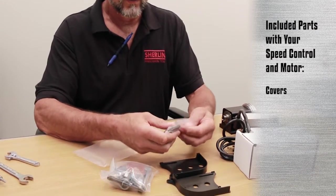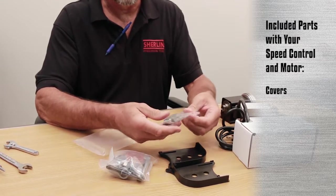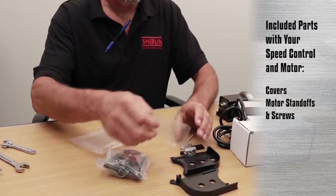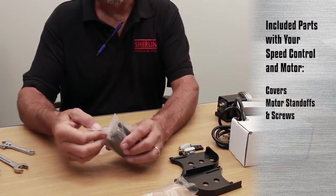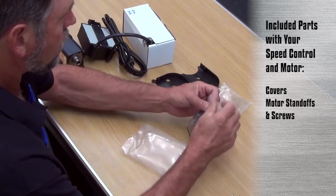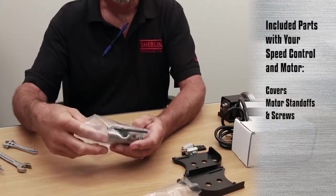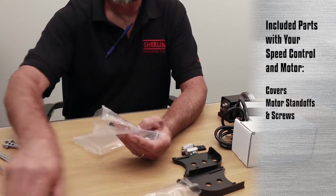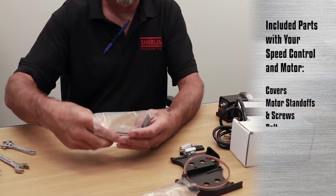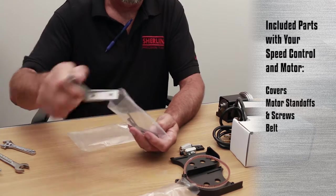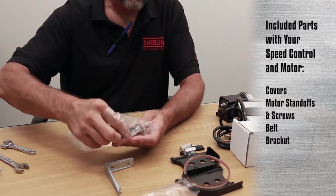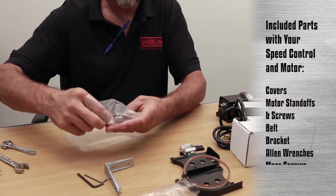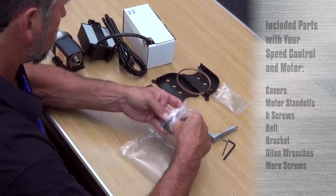These are the covers and these are the motor standoffs and screws. Some of these parts in this bag are used and some of them are not. We obviously don't use the tool post, so the parts we don't use, I'll set over here. And the parts we do use, I'll set over here—this one belt, and the bracket, two Allen wrenches, and screws.